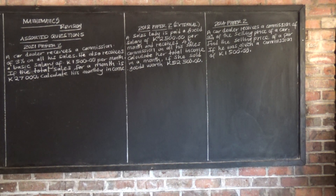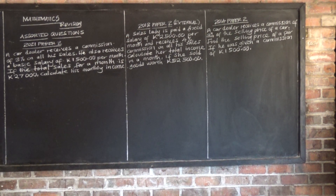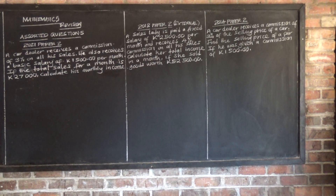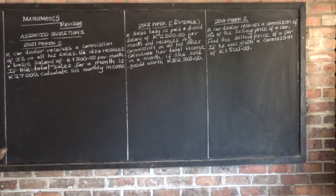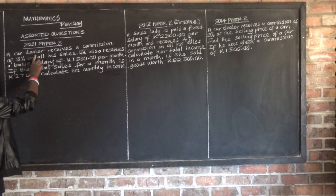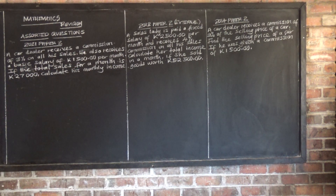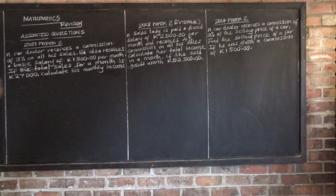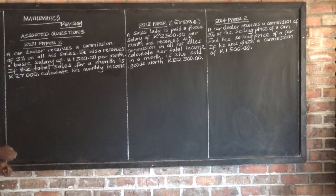Let's look at 2021 Paper 2. It's a question on commission design under the topic of social and commercial mathematics. A car dealer receives a commission of 3% on all his sales.